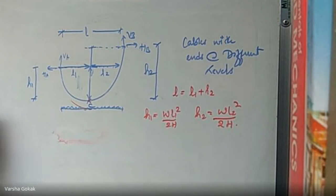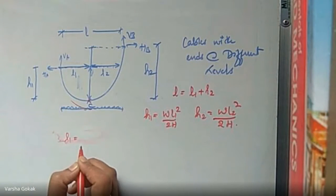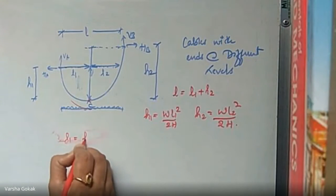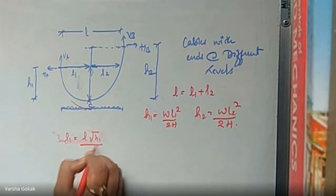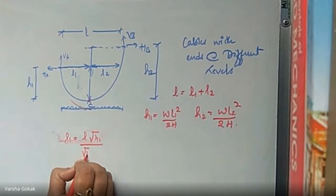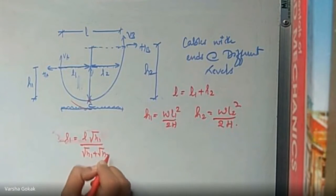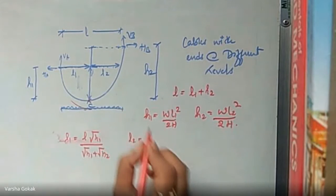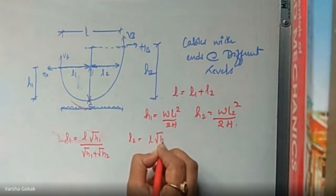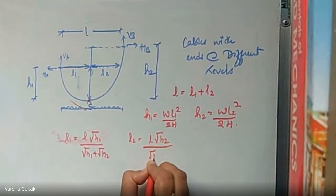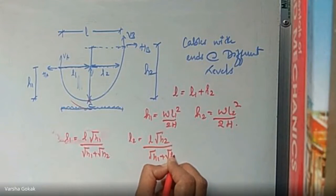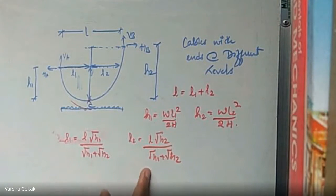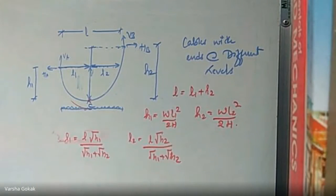Next, we have equations for L1 and L2. L1 is given by L times root of H1 divided by root H1 plus root H2. Similarly, L2 is given by L times root of H2 divided by root H1 plus root H2. These two equations give the two lengths L1 and L2.